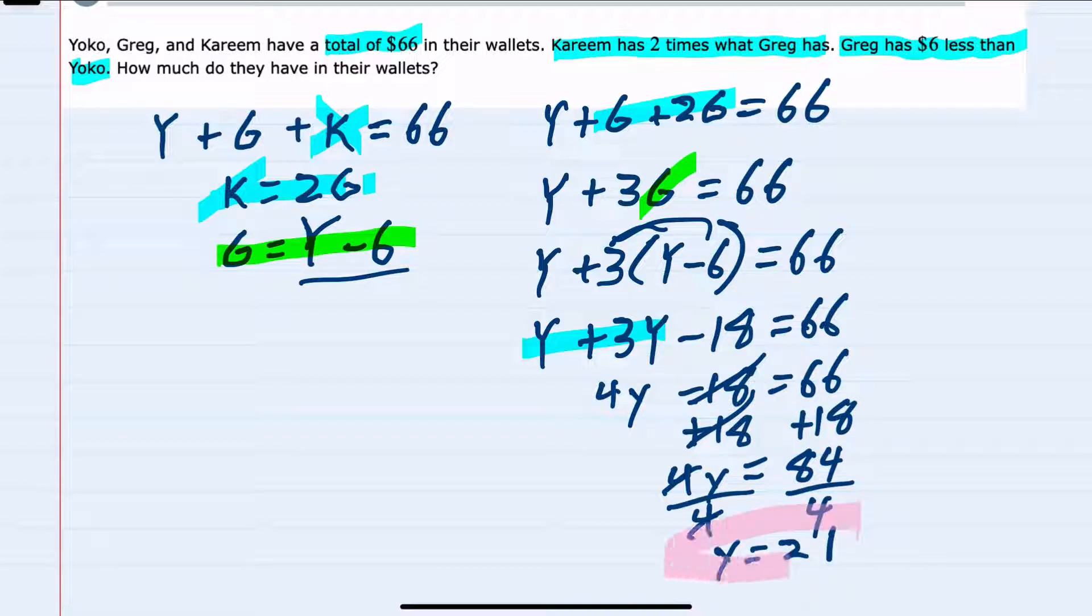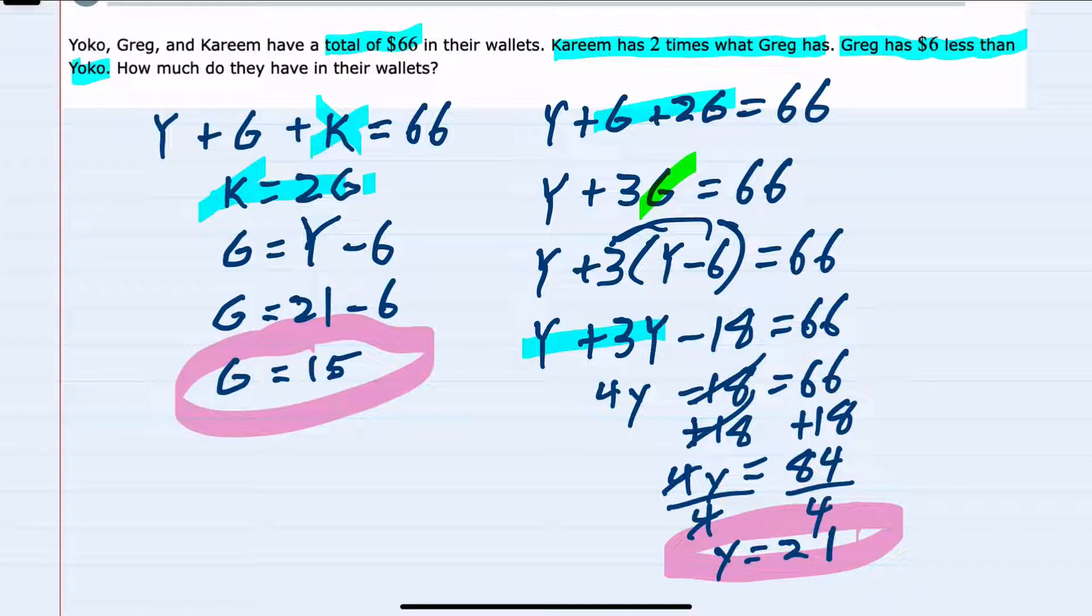So we have our first solution: Y is 21. Yoko has $21. And from here, if I look at this last equation, we were told that Greg has 6 less than Yoko. So substituting now that I know that Y is 21, G would be 21 minus 6. So G is 15. That's our second variable. Greg has $15.